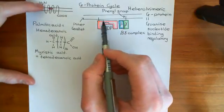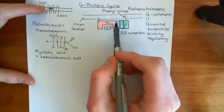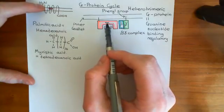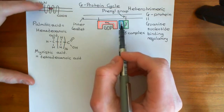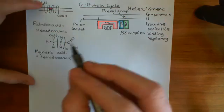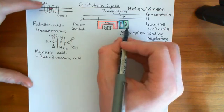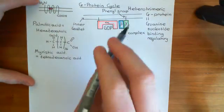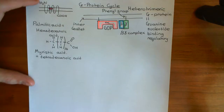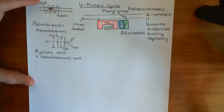Now there are many different types of heterotrimeric G-proteins that we haven't discussed yet. We will discuss the many different types of alpha, beta, and gamma subunits now, and then we'll come to the G-protein cycle after we've done that. So let's discuss the many different types of alpha, beta, and gamma subunits, starting with the alpha subunit, which is the most difficult one.